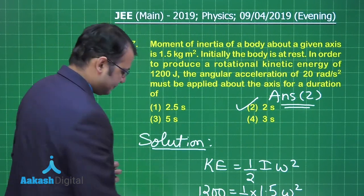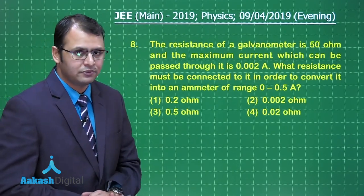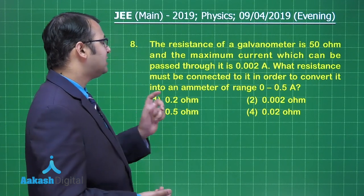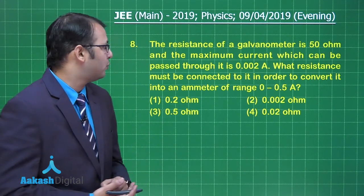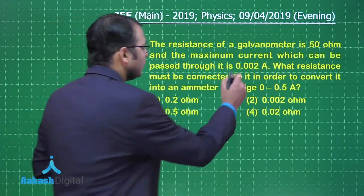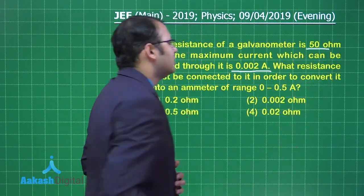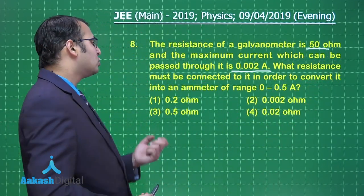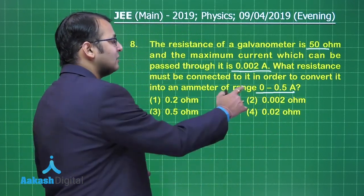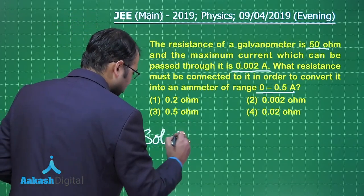Let's move on to our next segment. Here in this question you see, this belongs to section of electromagnetism, this belongs to particular chapter current electricity. The resistance of a galvanometer is 50 ohm and the maximum current which can be passed through galvanometer is 0.002 ampere. So this is ig and this is the value of capital G. What resistance must be connected to it in order to convert it into an ammeter ranging from 0 to 0.5 A? This is the maximum current which can be passed through the ammeter, so we have to find the value of the shunt which is to be added.